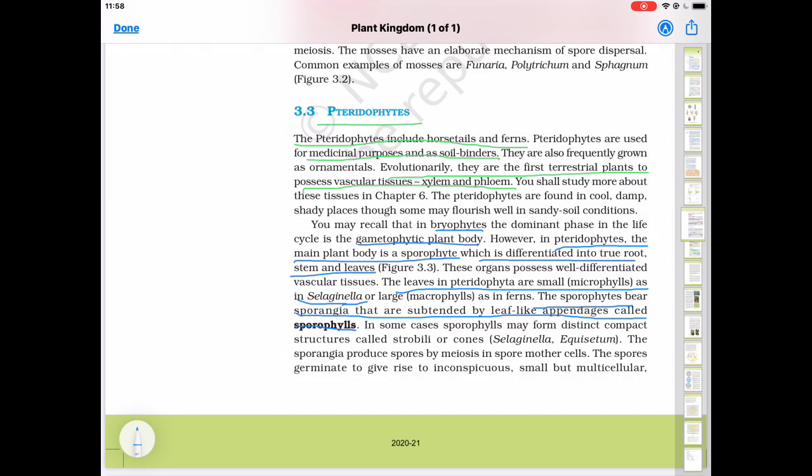In the sporophyte that is a plant body, on plant body strobilus is present that is group of sporophylls is present. On the sporophylls sporangia is present and inside the sporangia spores are produced. In some cases sporophylls may form distinct compact structure called strobilus or cones. This strobilus is similar to the cones of gymnosperms that I will tell you next time.